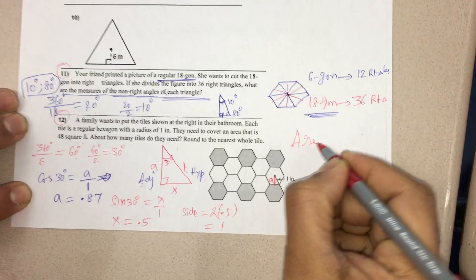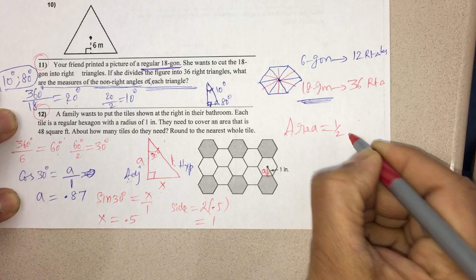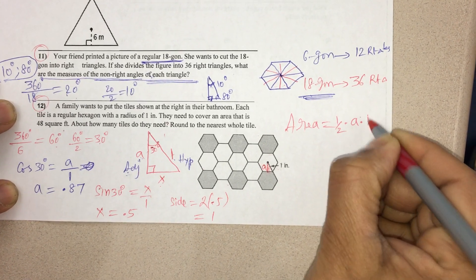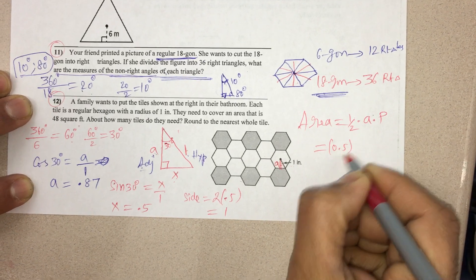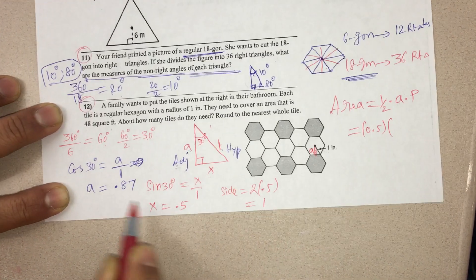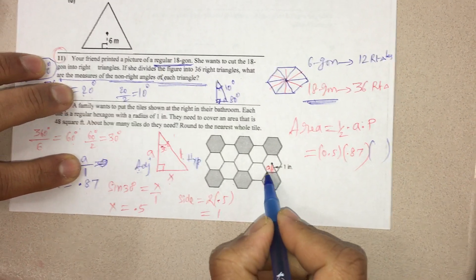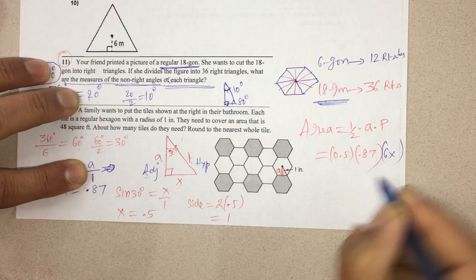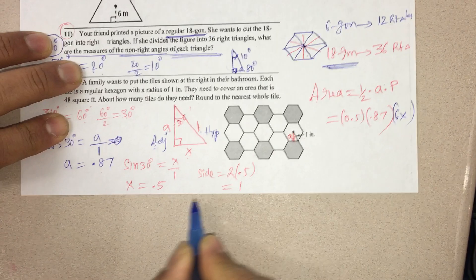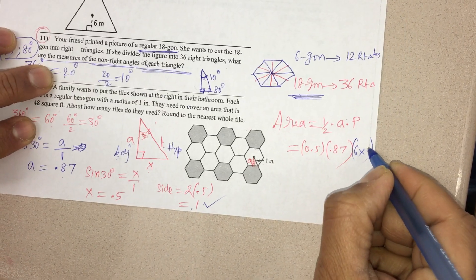Now we have to find the area of each tile. Each tile is half times apothem times perimeter. Half is 0.5. The apothem we got is 0.87. And the perimeter, how many sides are there in each tile? 1, 2, 3, 4, 5, 6. And each side is double of this x, which is 1. We got 1 as the side. So, 6 times 1.